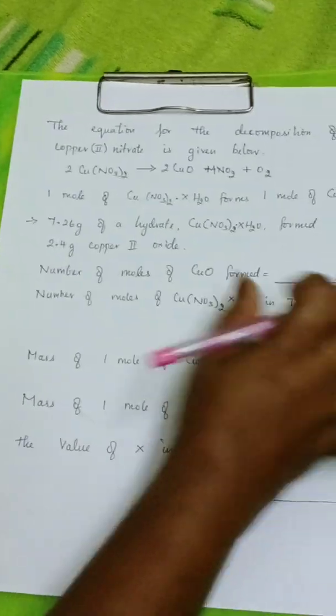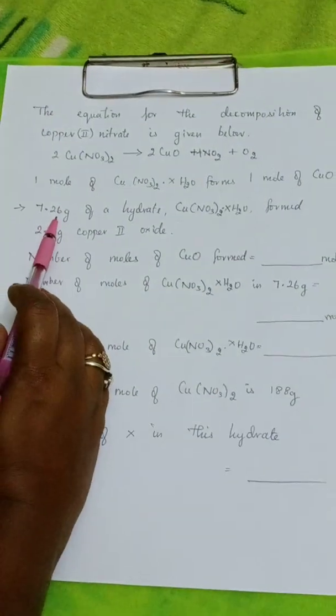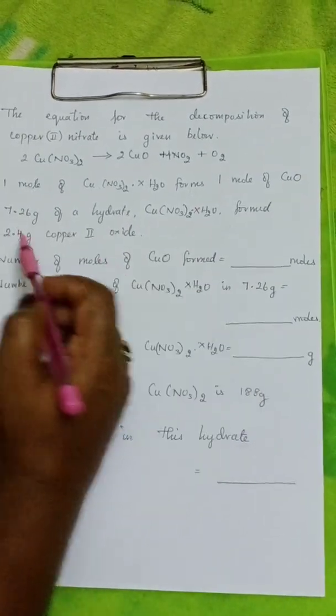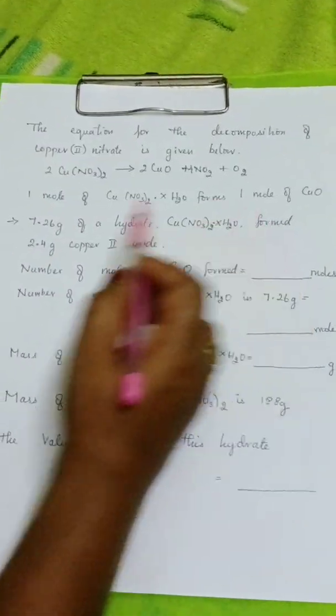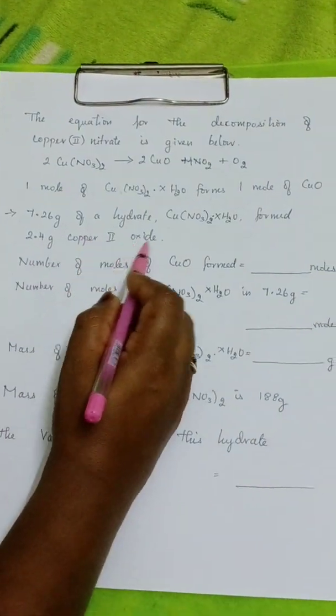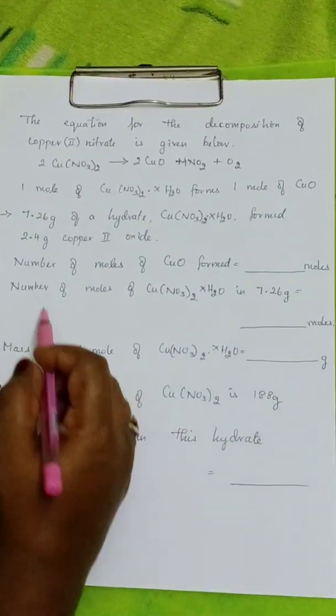Now see the question here. 7.26 grams of a hydrated copper nitrate formed from 2.4 grams of copper II oxide. So, now see the question here.